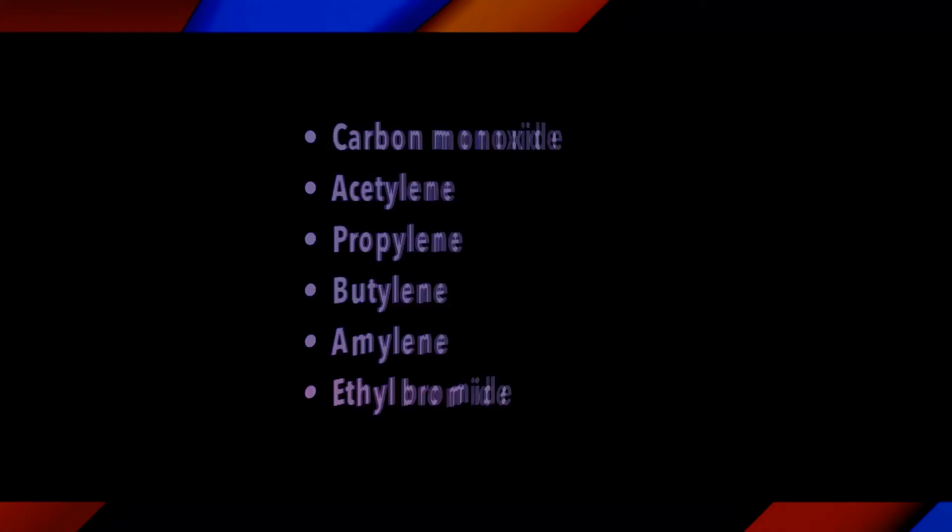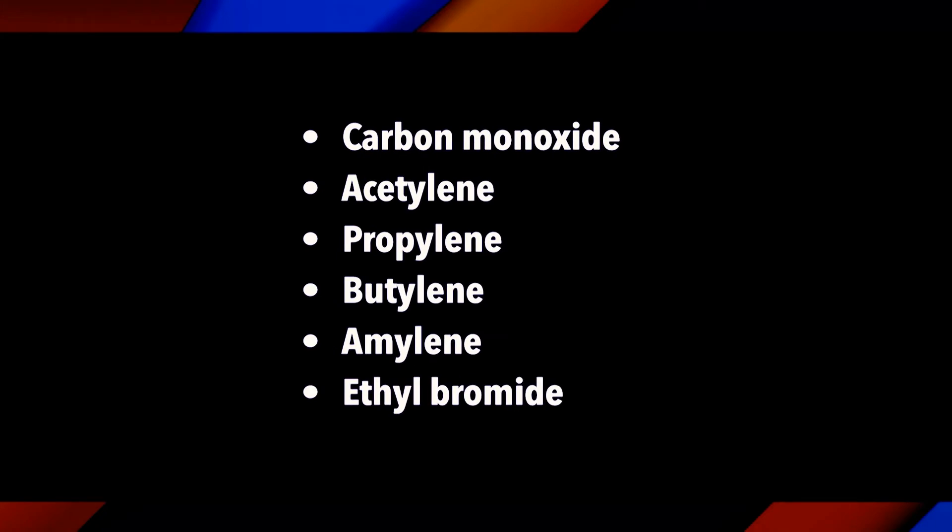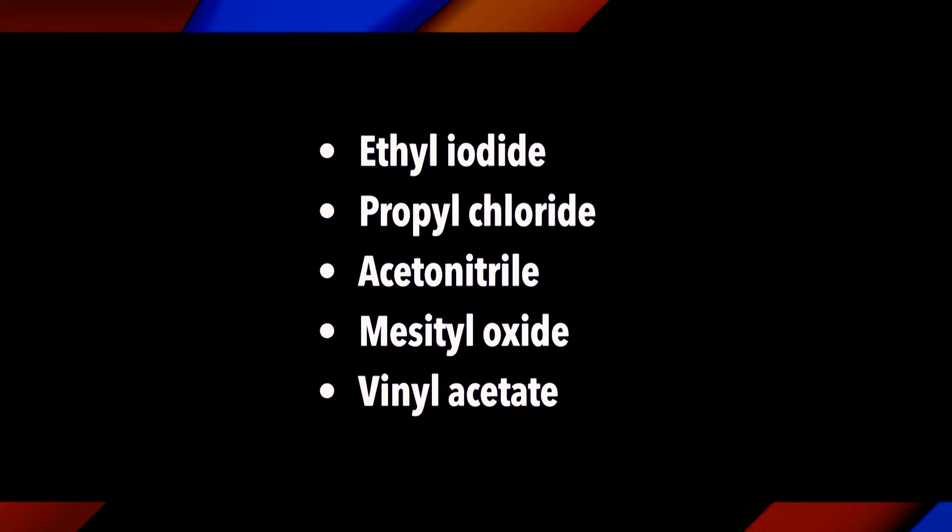Among a very large number of gases and volatile substances investigated by Crocker (1932), Nelson, Harvey, and others, the following were found to cause epinasty of tomato and potato petioles: carbon monoxide, acetylene, propylene, butylene, amylene, ethyl bromide, ethyl iodide, propyl chloride, acrylonitrile, methyl oxide, and vinyl acetate. Some plant seedlings produce volatile products which kill the test plant.